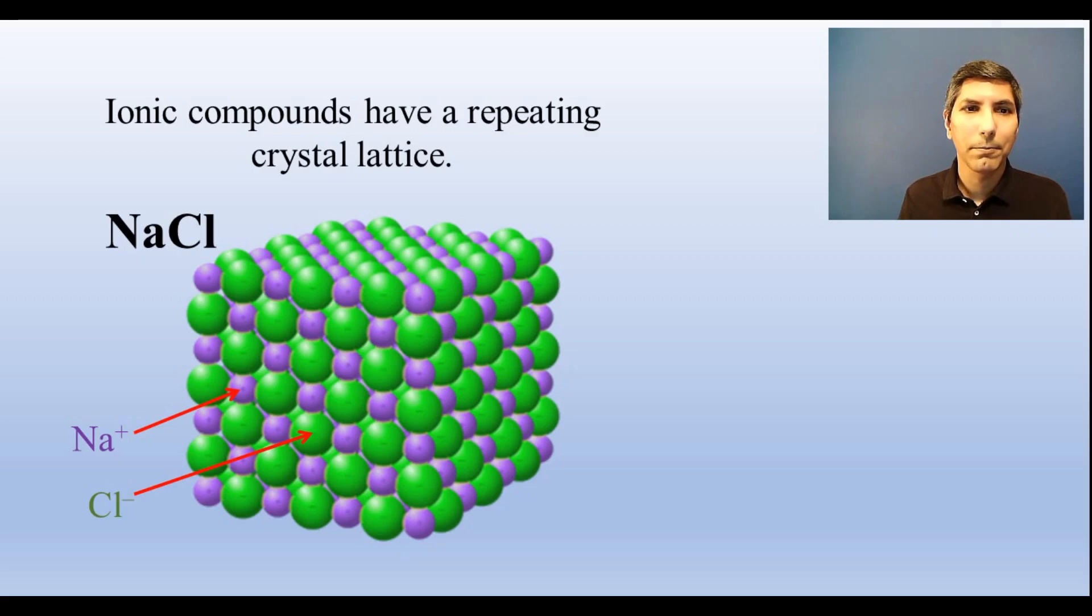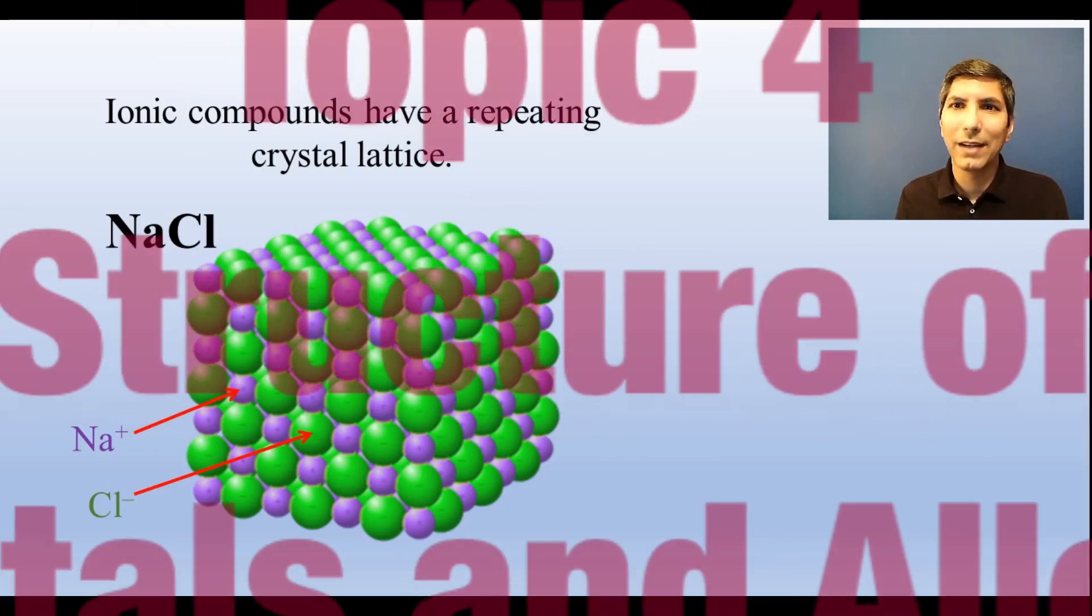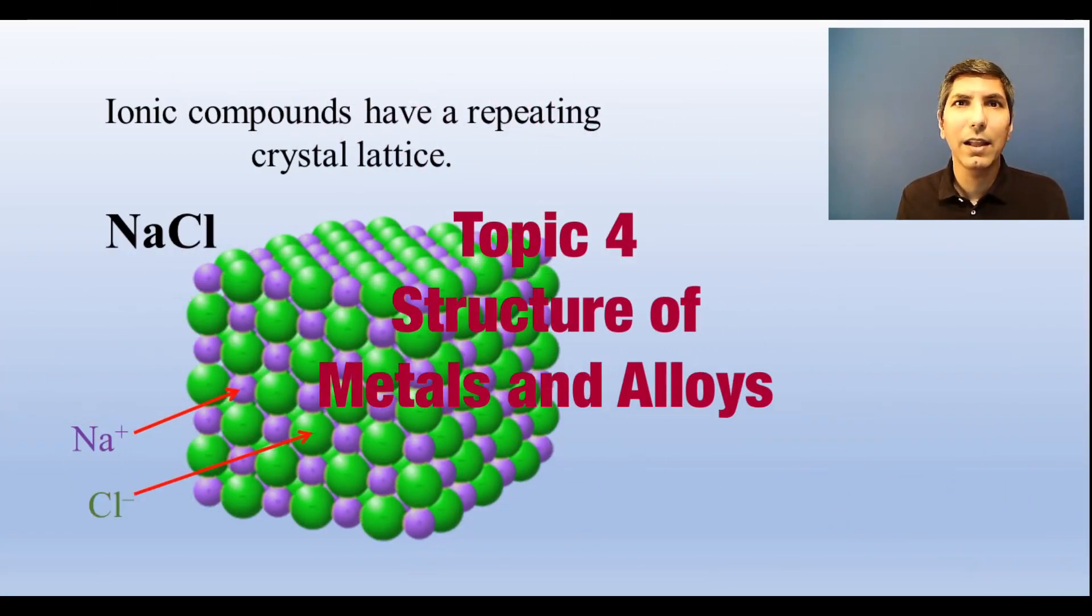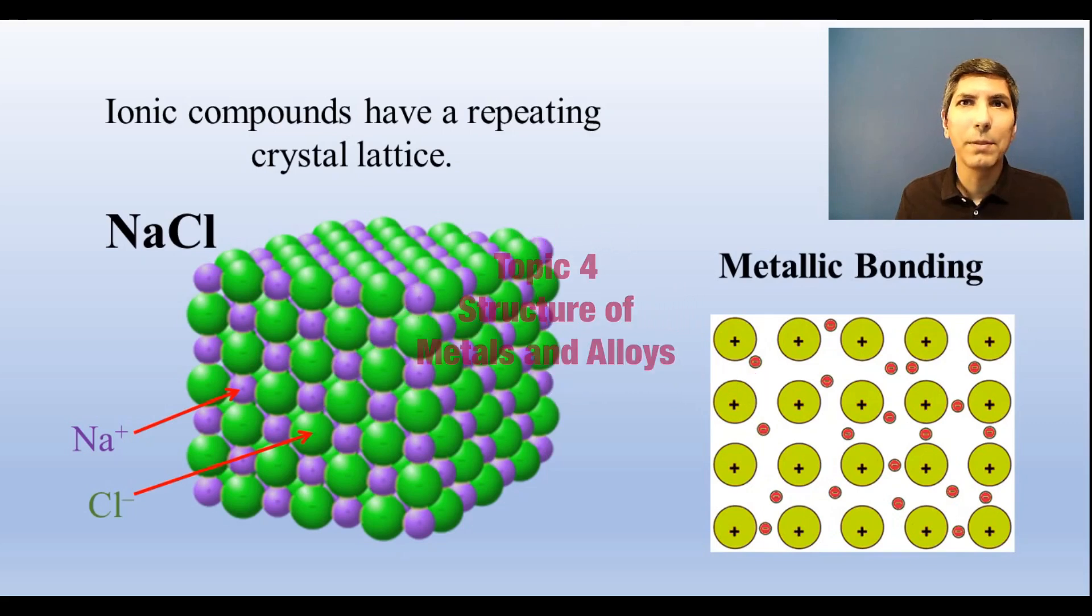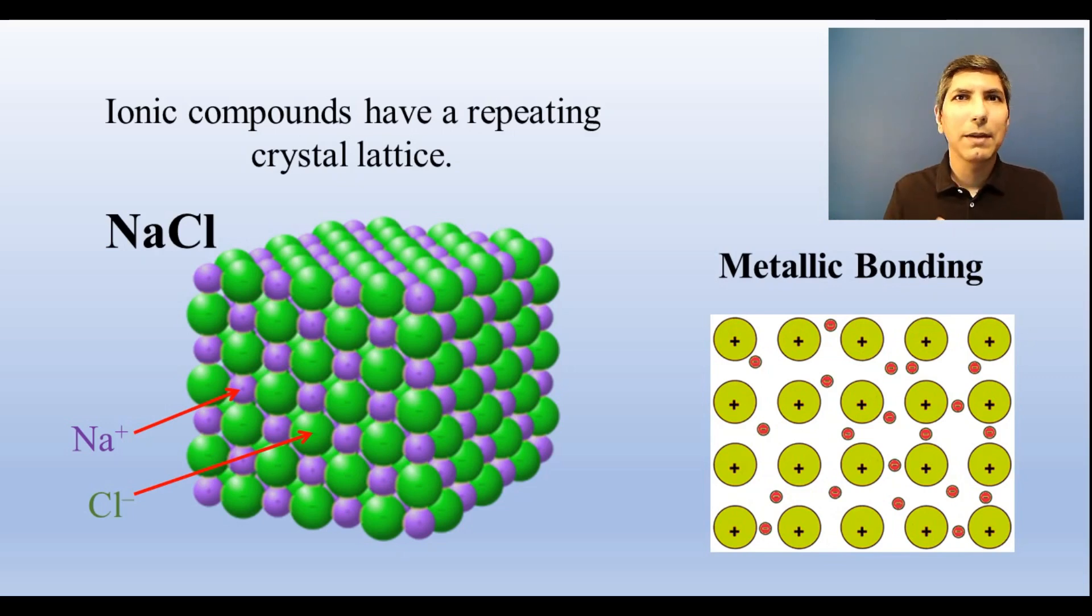Metals are bonded differently. Metallic elements exhibit what we call metallic bonding, where the valence electrons are delocalized and can basically float around. So there are all these positively charged metal ions surrounded by a sea of electrons.